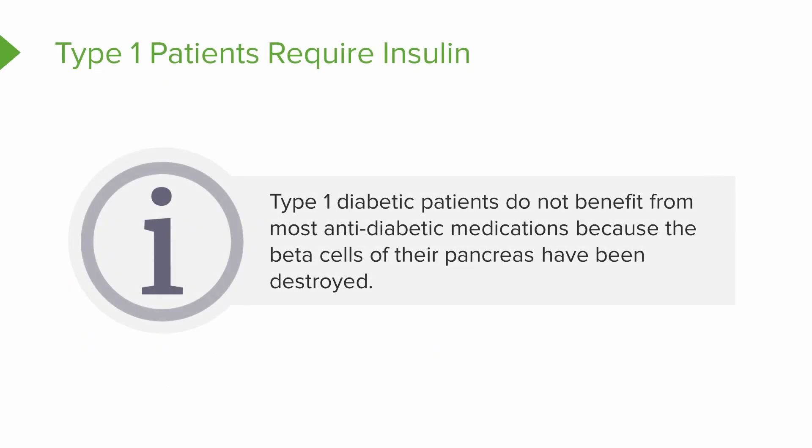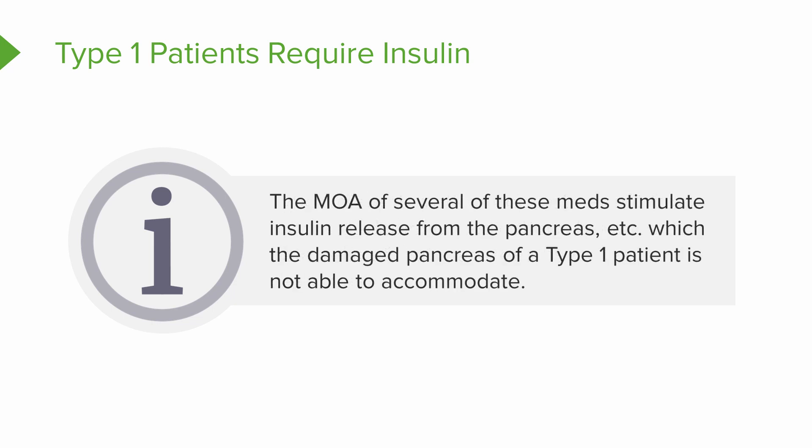The answer is type 1 diabetic patients. They don't benefit from most of the antidiabetic medications because the beta cells of their pancreas have been destroyed. The mechanism of action of most of these oral antidiabetic medications is to stimulate insulin release from the pancreas. If you're a type 1 patient, your pancreas is dead — not just mostly dead, it's dead. So the damaged pancreas of a type 1 patient is not able to accommodate these oral medications.